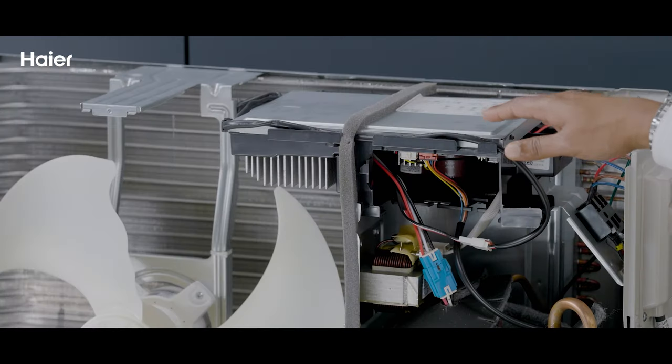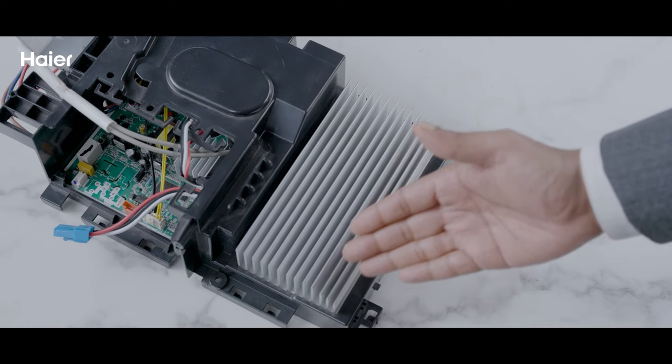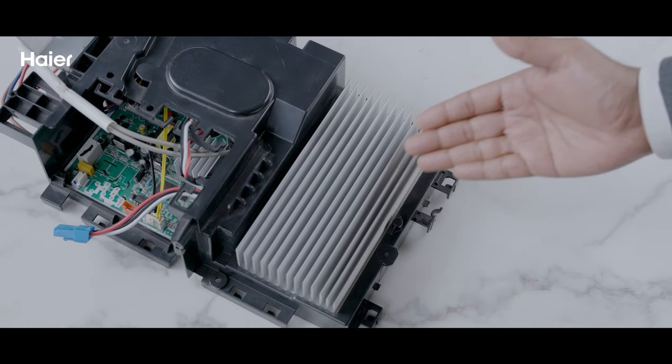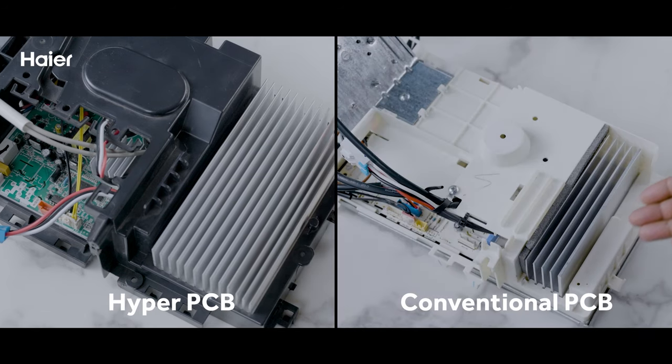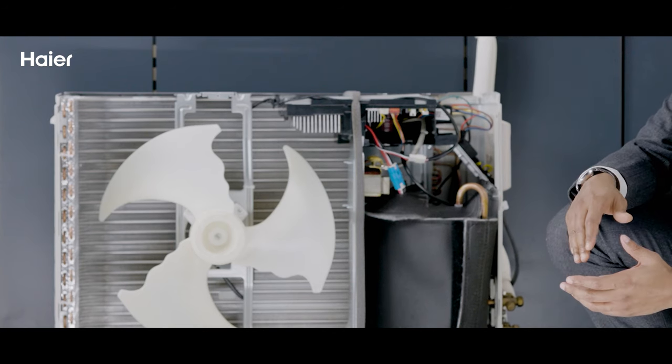This is the Haier PCB inside the Haier AC's outdoor unit. To secure from heat, this has a bigger heat sink, way bigger than a similar PCB in a conventional AC, and this has been successfully tested at 65 degrees.